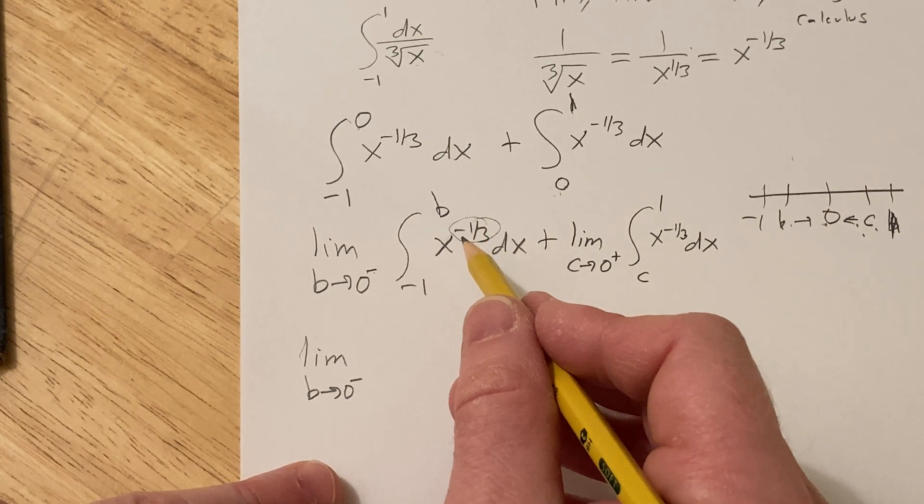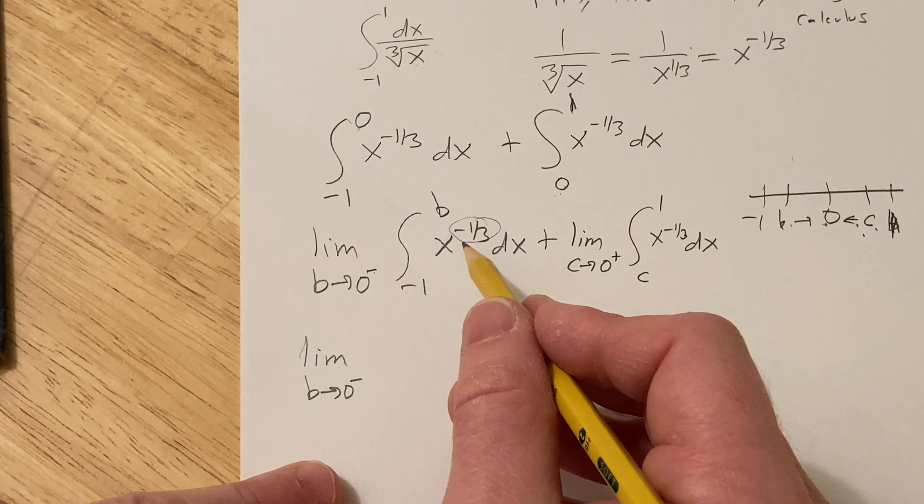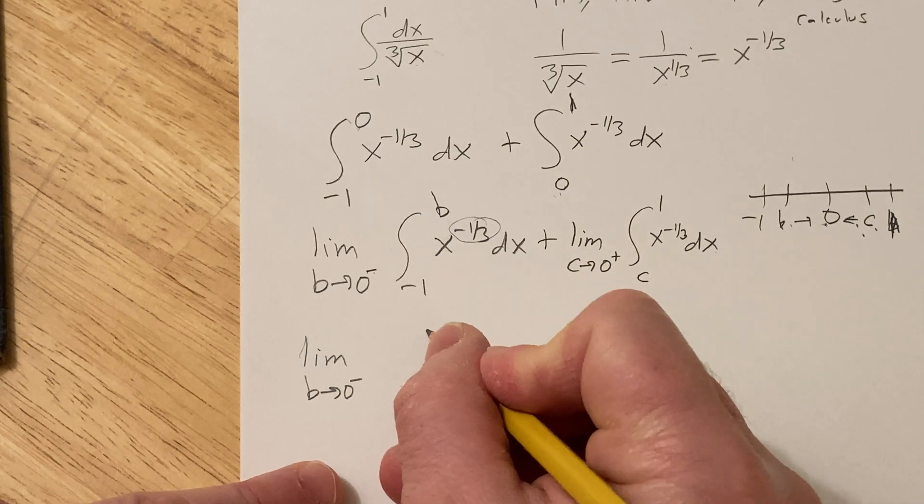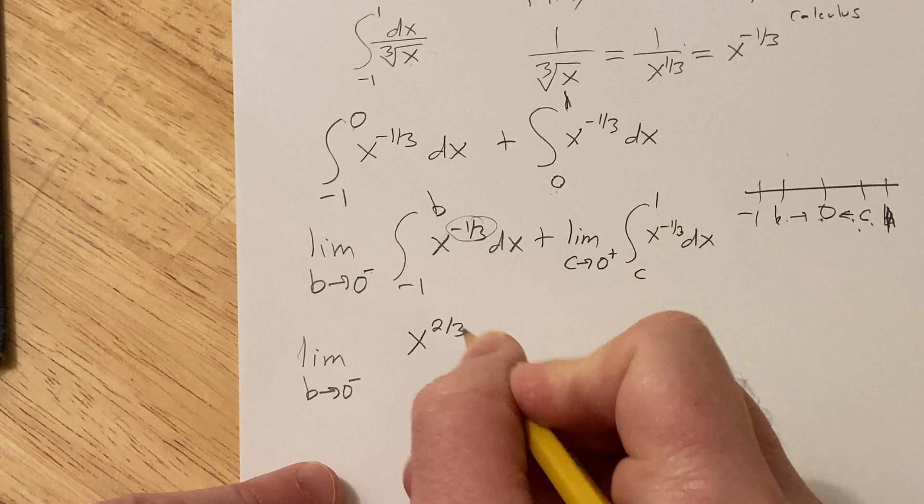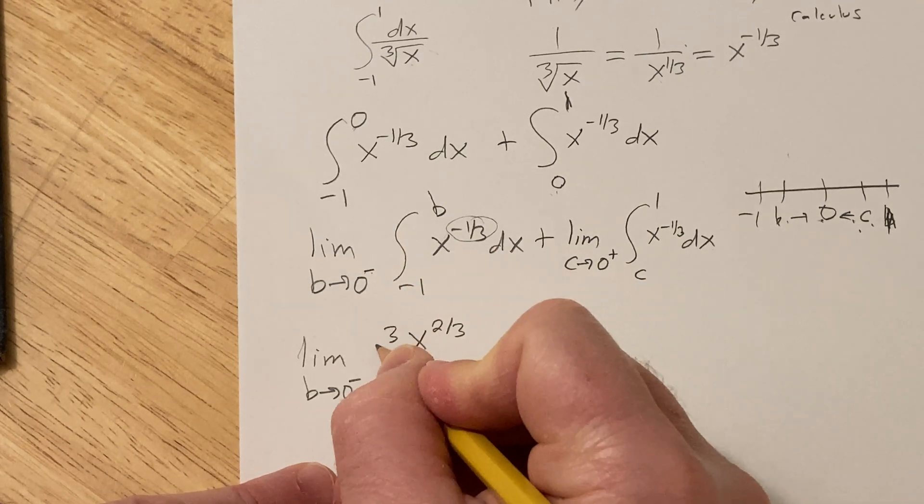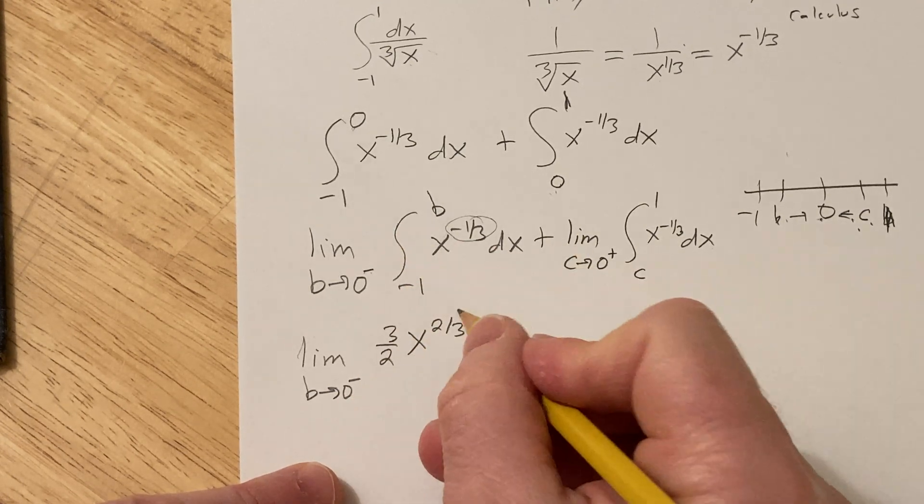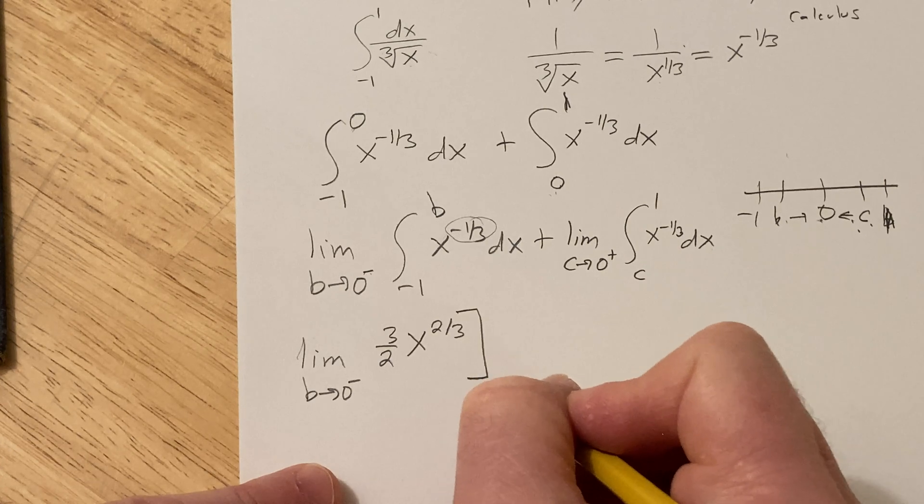One plus negative one-third is three-thirds plus negative one-third, which is two-thirds. So this is x to the two-thirds divided by two-thirds, but when you divide by two-thirds you multiply by three-halves. We're going from negative one to b.